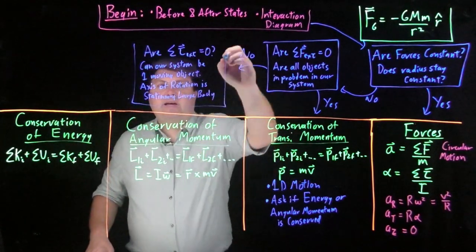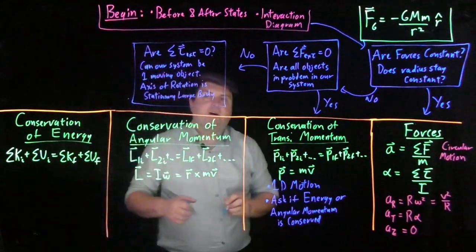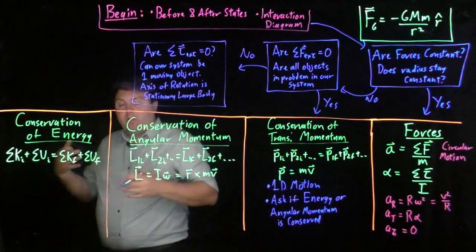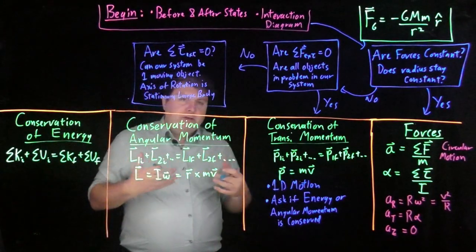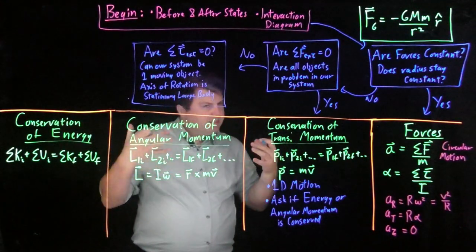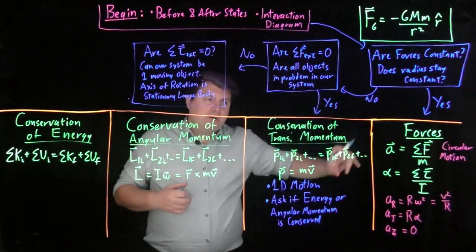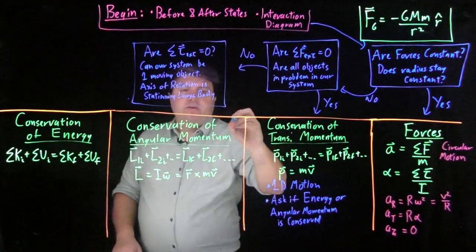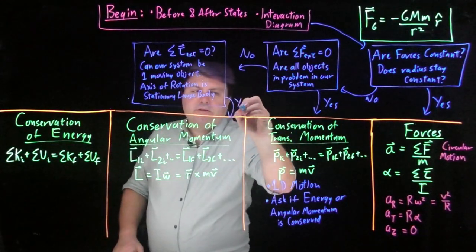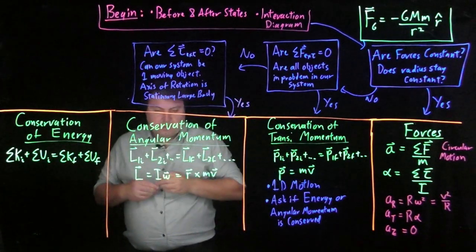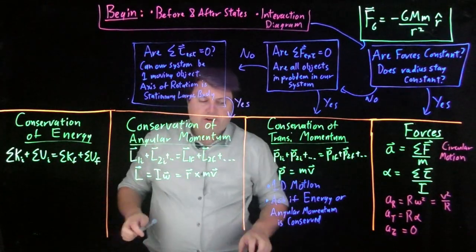Is a stationary large body. So if we are talking about a satellite orbiting the Earth or if we are talking about a planet or comet orbiting the sun, it's a really good assumption to say that the sun isn't really moving very much and that we can just look at the motion of that one object. So if we can do this, say yes to this, then we have our conservation of angular momentum.